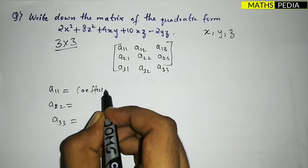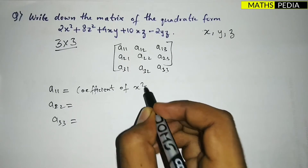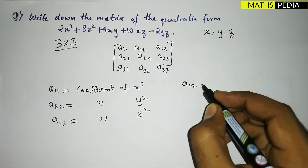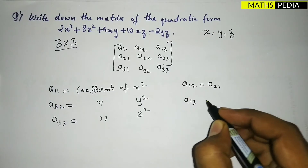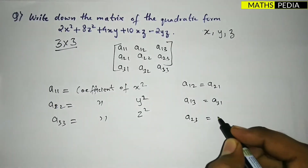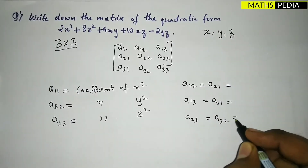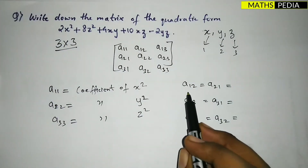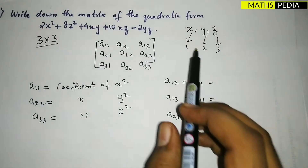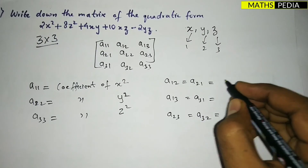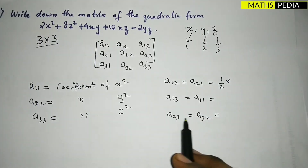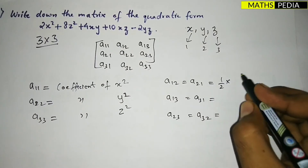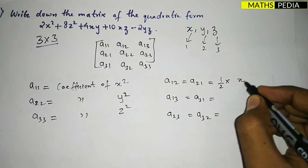For off-diagonal elements: a₁₂ = a₂₁ (half of coefficient of xy), a₁₃ = a₃₁ (half of coefficient of xz), and a₂₃ = a₃₂ (half of coefficient of yz). Using the numbering trick — x=1, y=2, z=3 — when you see indices 1,2 that corresponds to xy; indices 1,3 to xz; and indices 2,3 to yz. Always take half of the coefficient for off-diagonal terms.